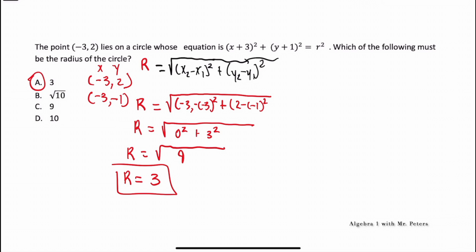To visualize this: if the center is at (-3, -1) and the edge point is (-3, 2), the X values are the same, so we just had to go up 3 units in Y — from -1 to 0, 1, then 2. Counting that gives a distance of 3. This is another way to see the problem visually without all the algebra.